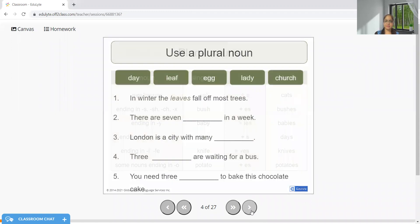Let's quickly fill in the blanks with plural nouns. There are seven days in a week. London is a city with many churches. Three ladies are waiting for a bus. You need three eggs to bake this chocolate cake.